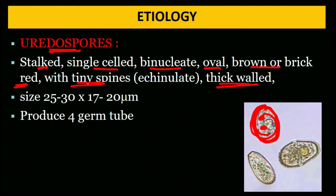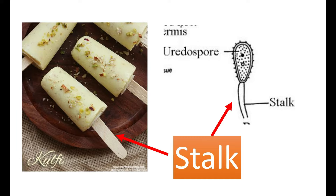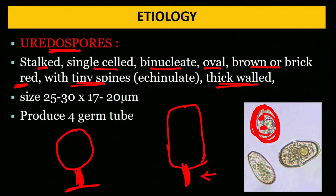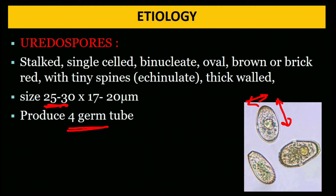The uredospore is stalked — 'stalked' means it has a stalk like the stick of a kulfi ice cream, connecting it to the mycelium. It produces four germ tubes upon germination.